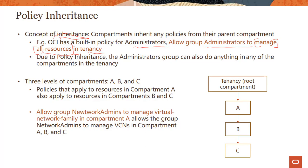Let's look at an example. Say we have the root compartment — which is the parent for all other compartments in a tenancy — and there are three other compartments A, B, and C. Policies that apply to resources in compartment A also apply to resources in compartments B and C. So if you write a policy allowing network admins to manage virtual network family in compartment A, that also allows them to manage networks in compartments B and C. You don't have to write policies specifically for B and C because they inherit from their parent compartment.